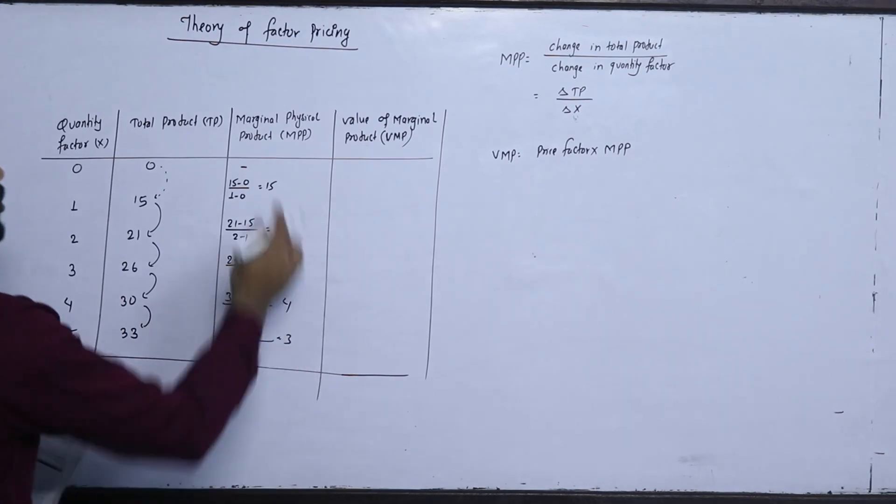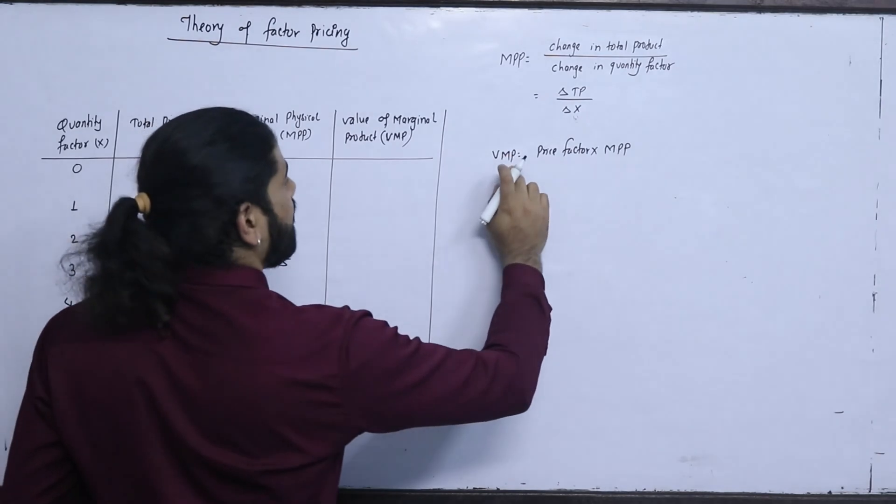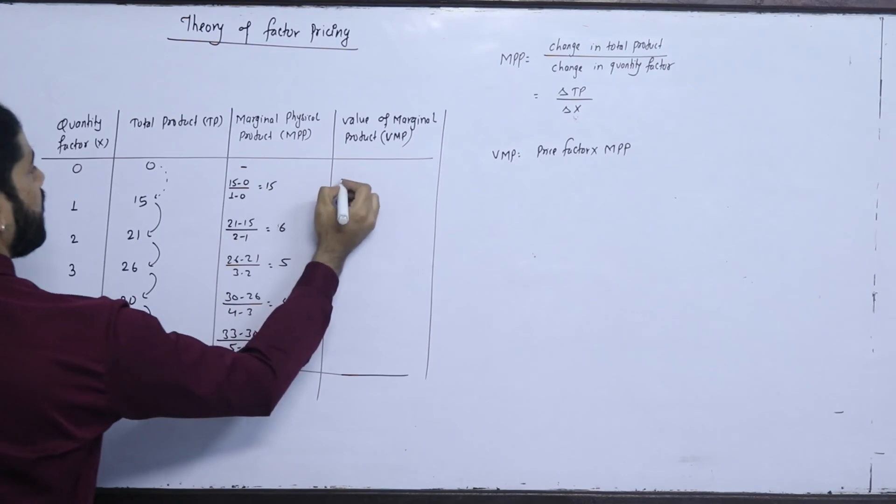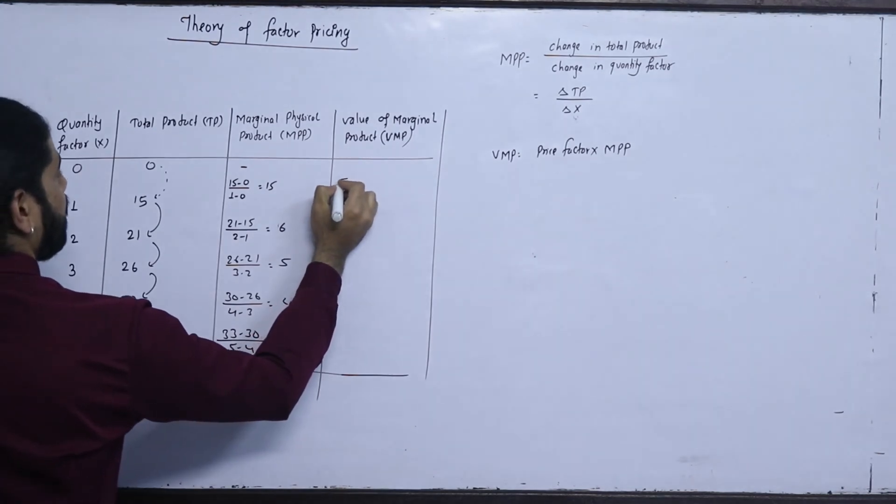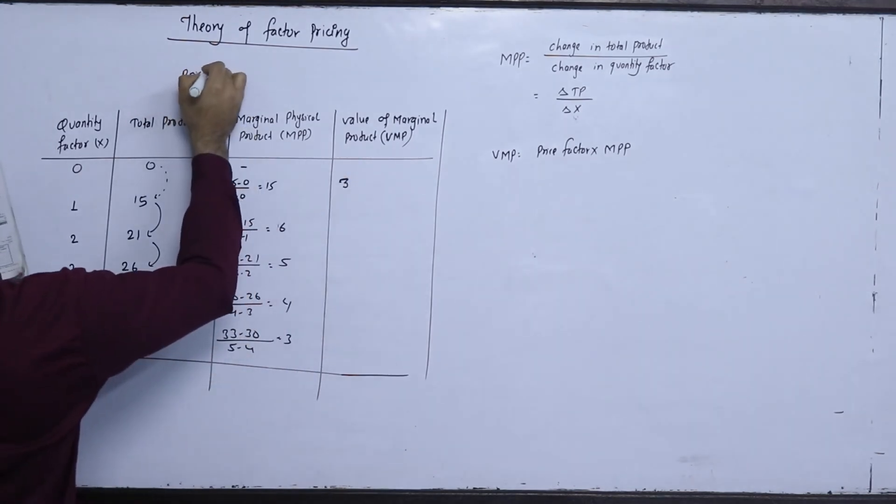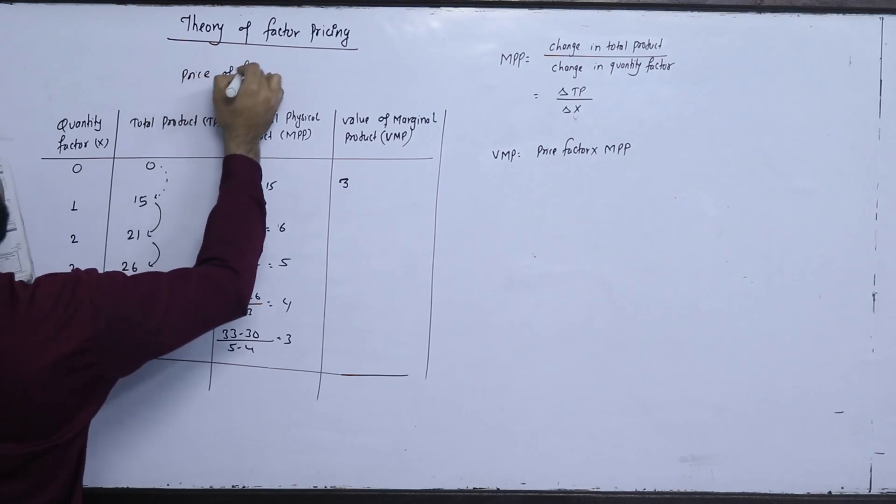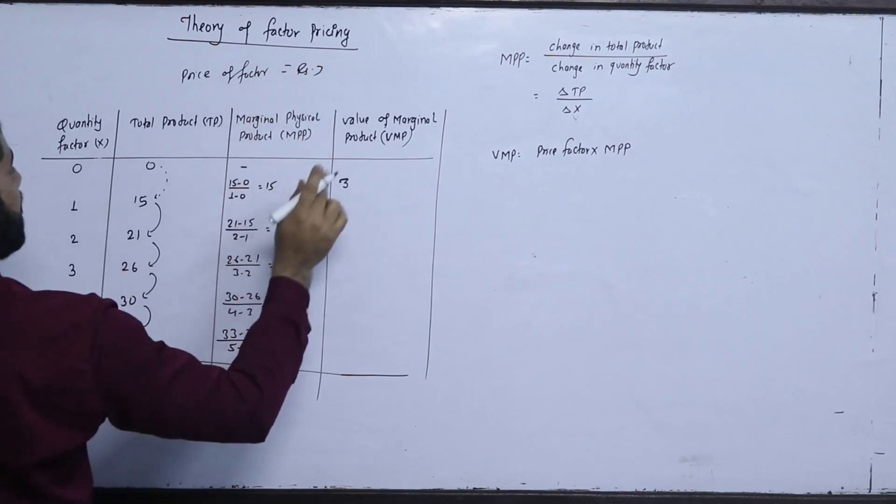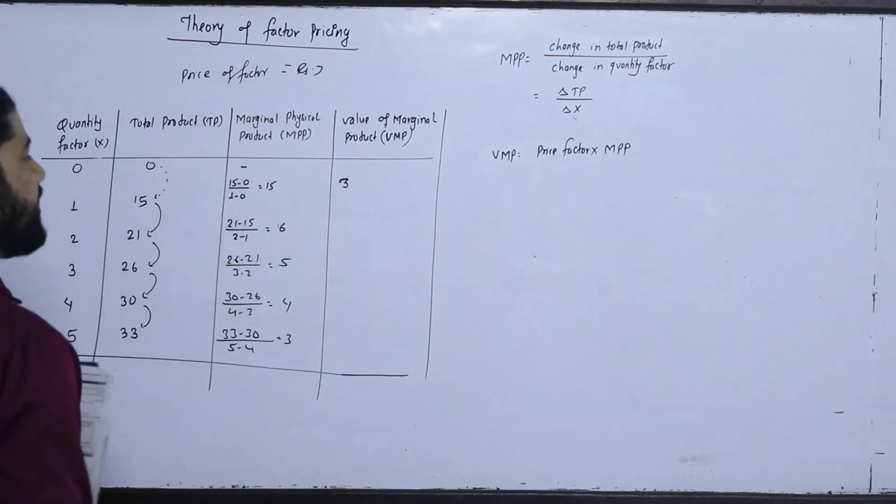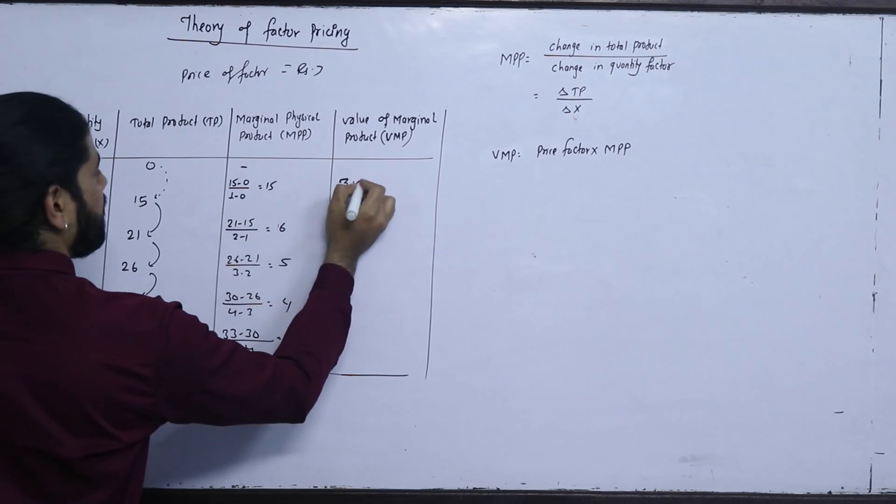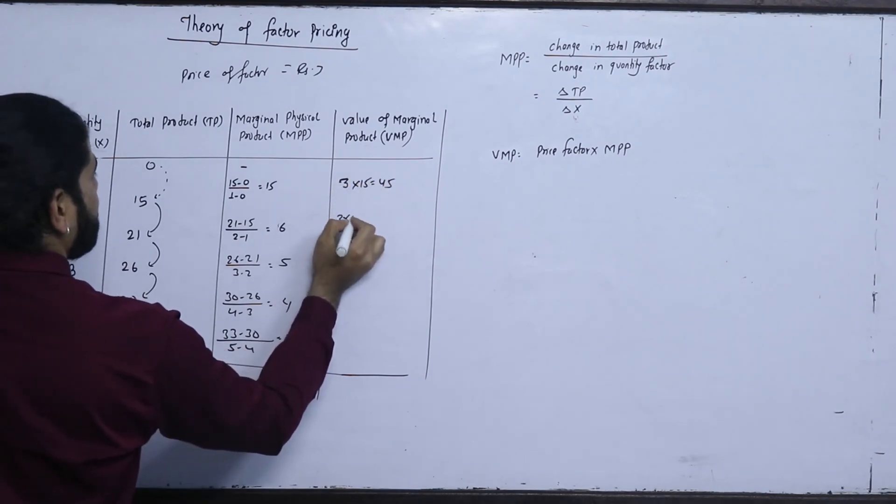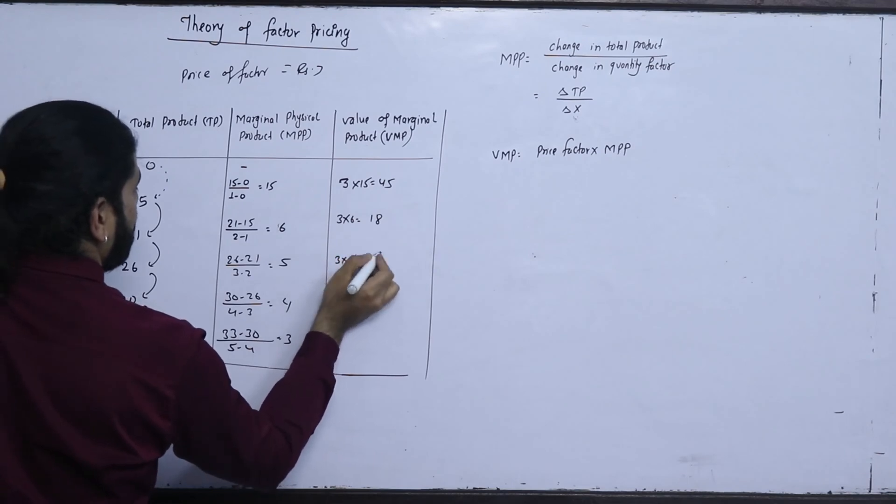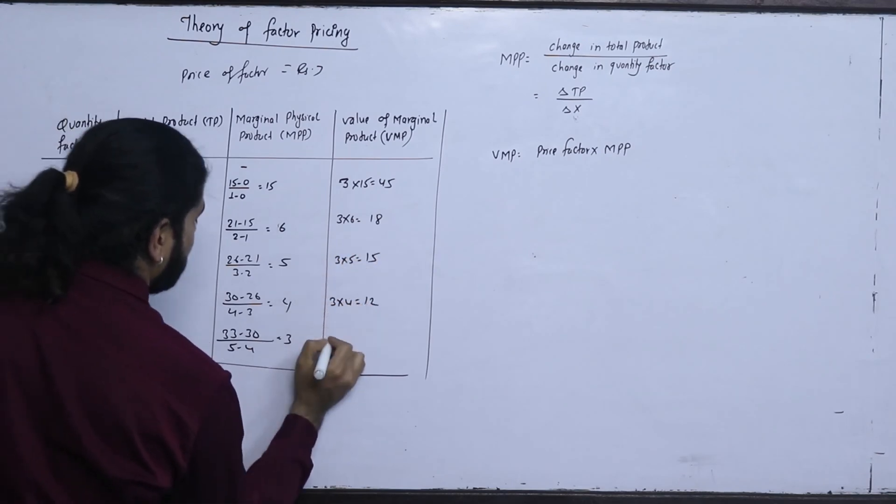This is the value of marginal product. This is the price factor into MPP. And see, 15 into the price factor is 3. Price factor is given. Price factor, quantity factor. So, the price factor is 3. Then, 1 unit change, 15 units change is 3 into 15, 45. 3 into 6, 18. 3 into 5, 15. 3 into 4, 12. And here 3 into 3, 9.